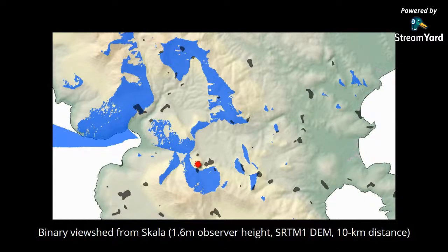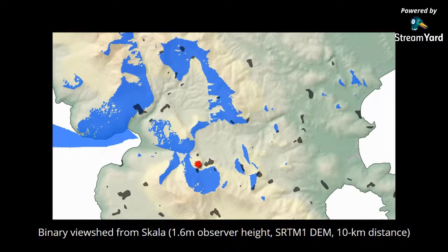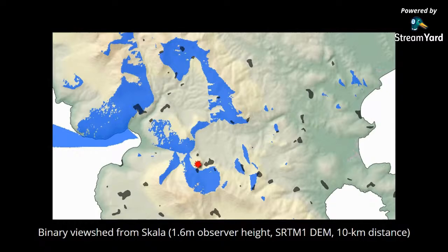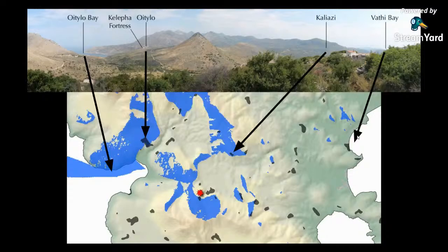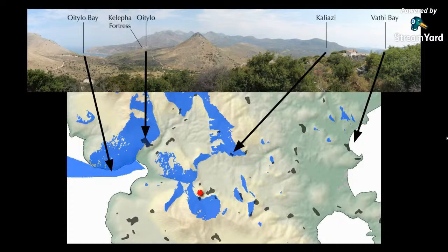The viewshed confirmed that I could see part of the bay, and should be able to see the town of Etilo — covered by the blue area. However, Kelifa, shown in gray, was not predicted to be visible by the analysis. According to the analysis, the bay at Vathi was also not covered, which perhaps explains why it wasn't totally visible — it was pretty far away.